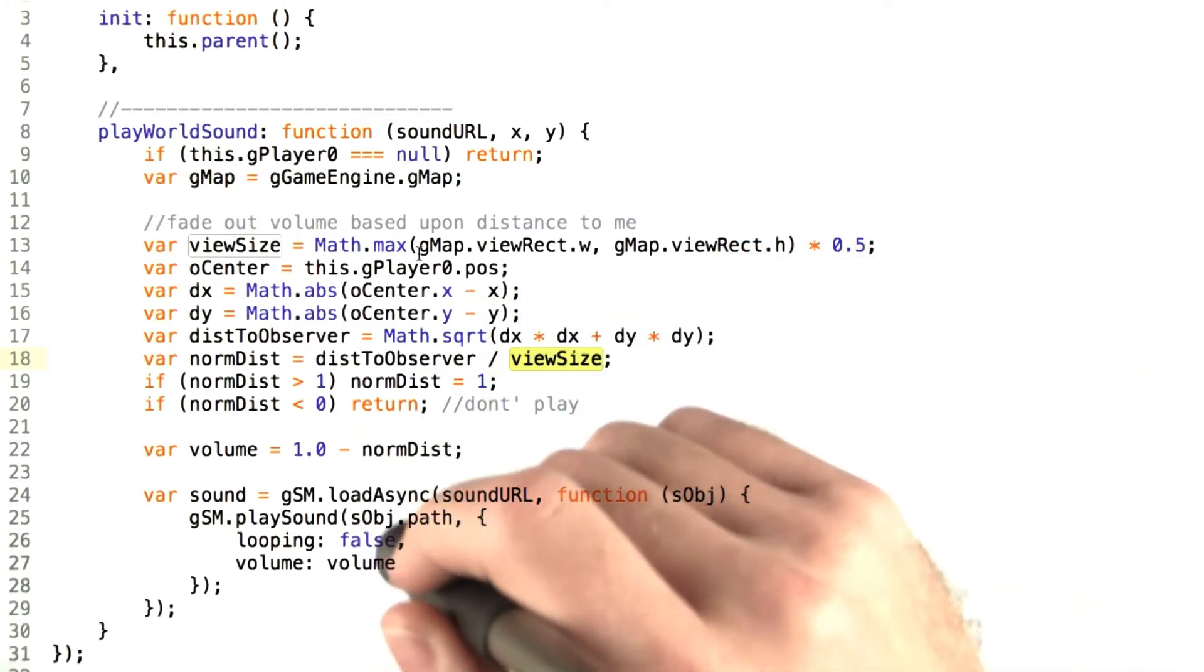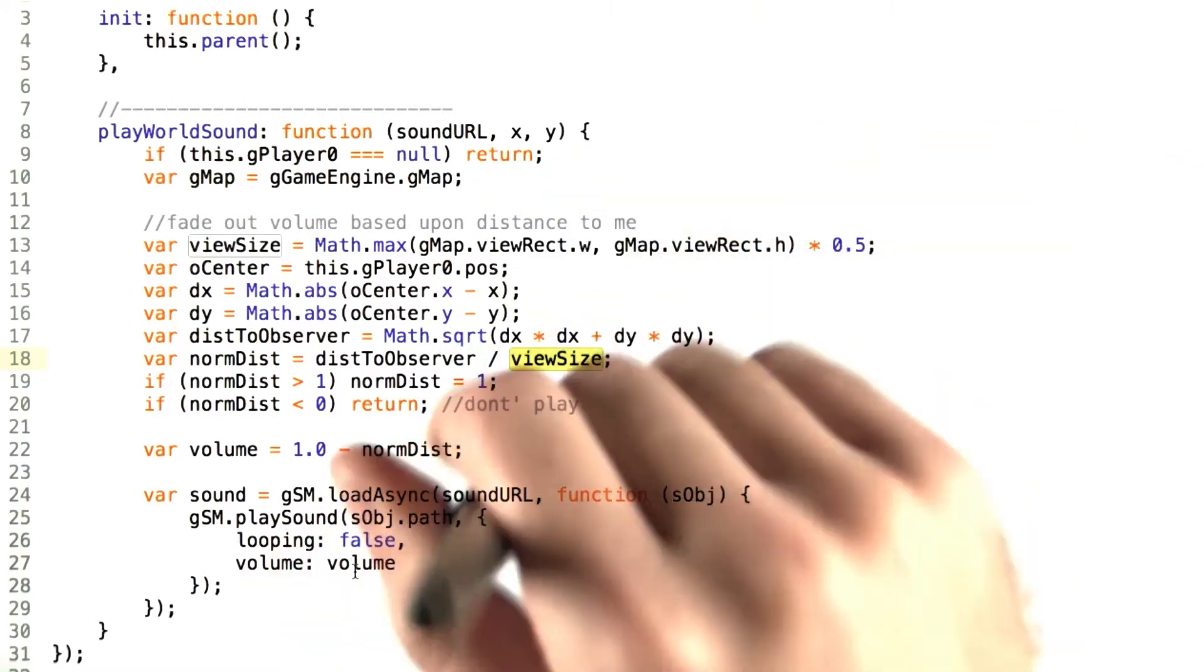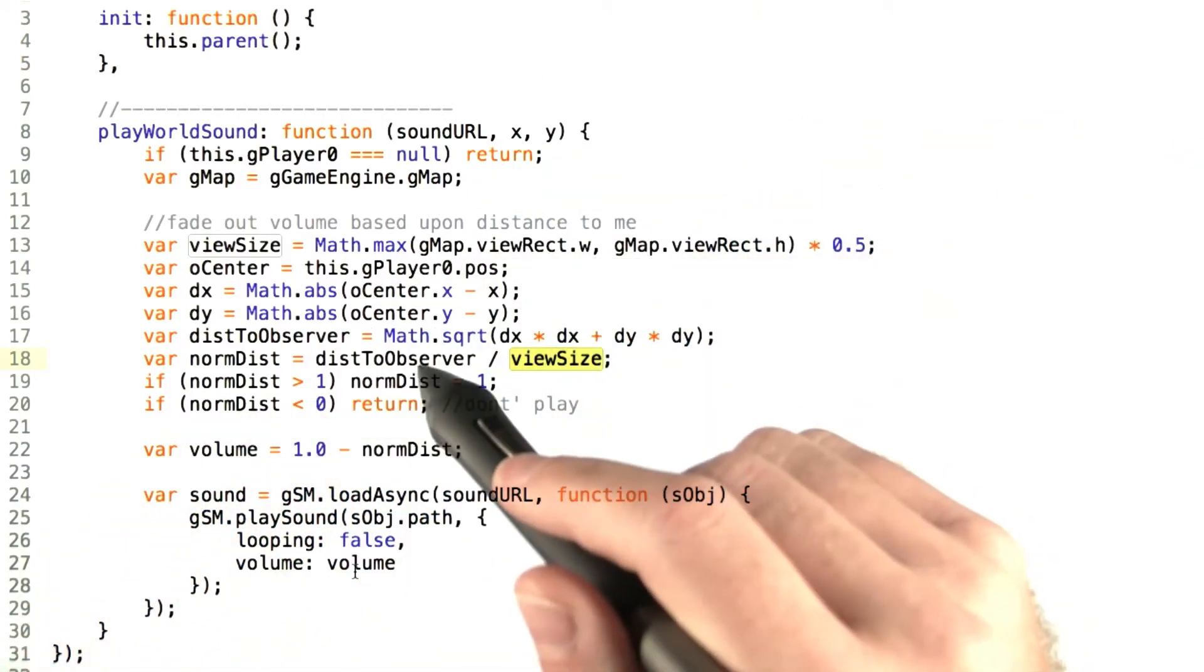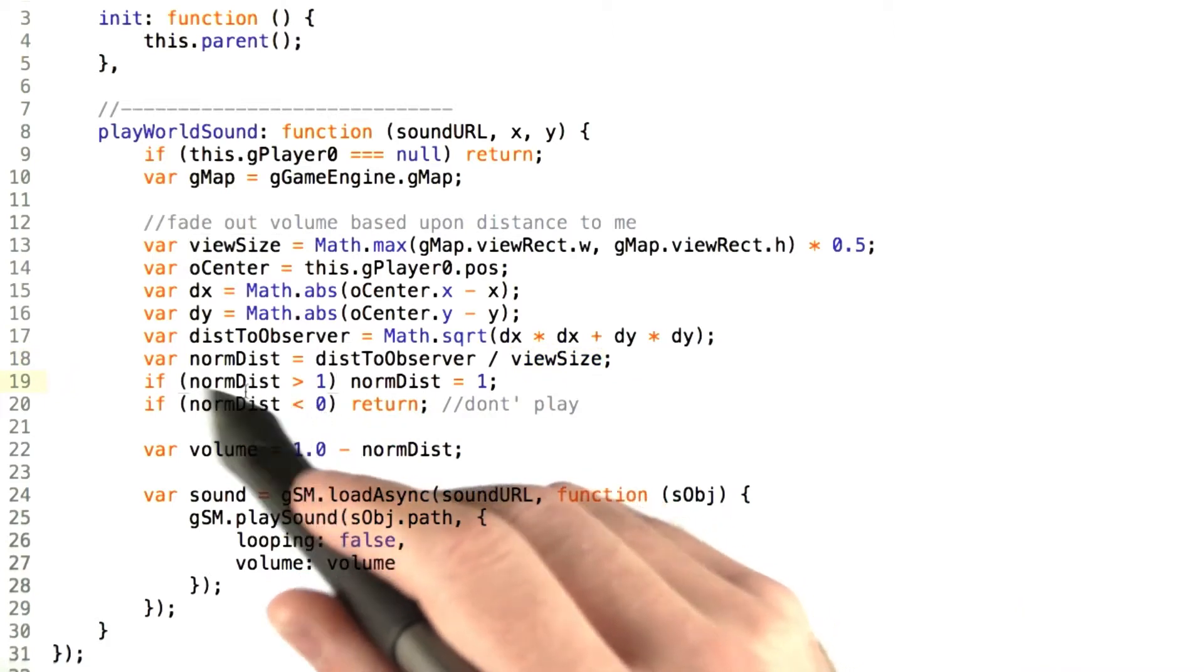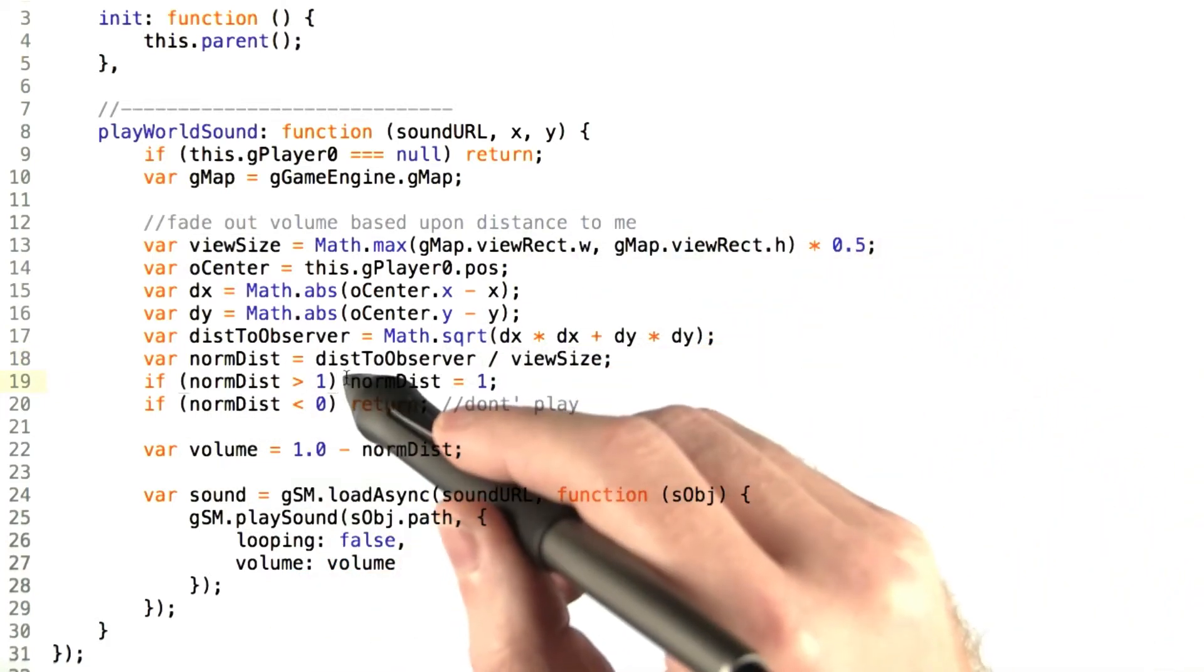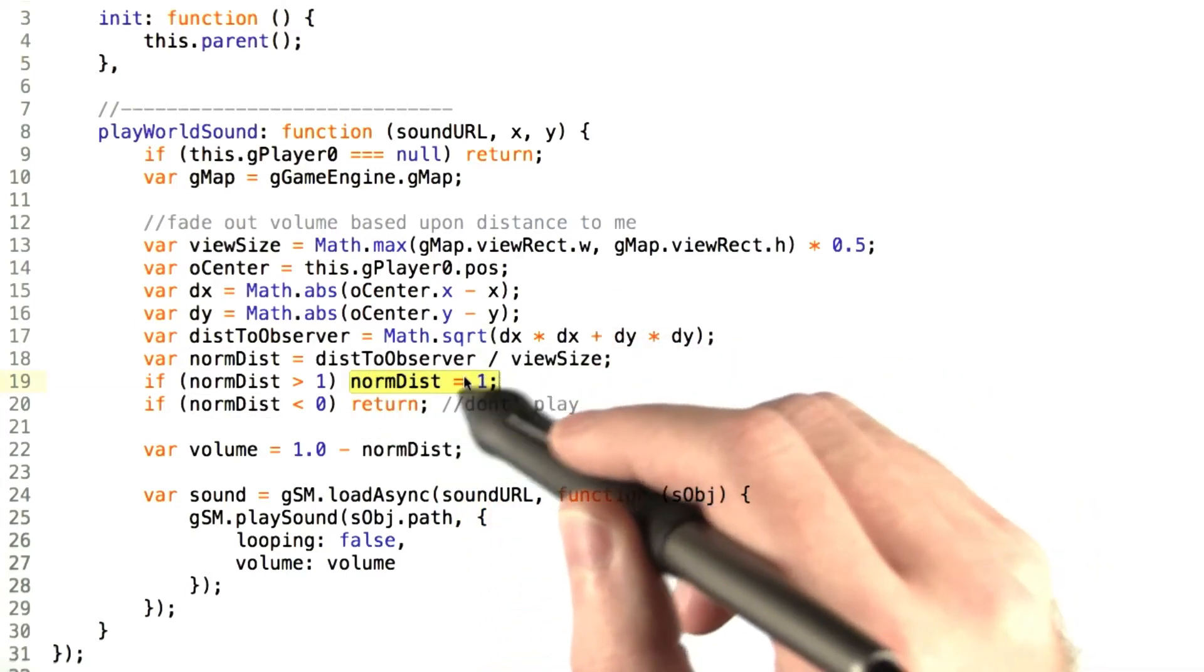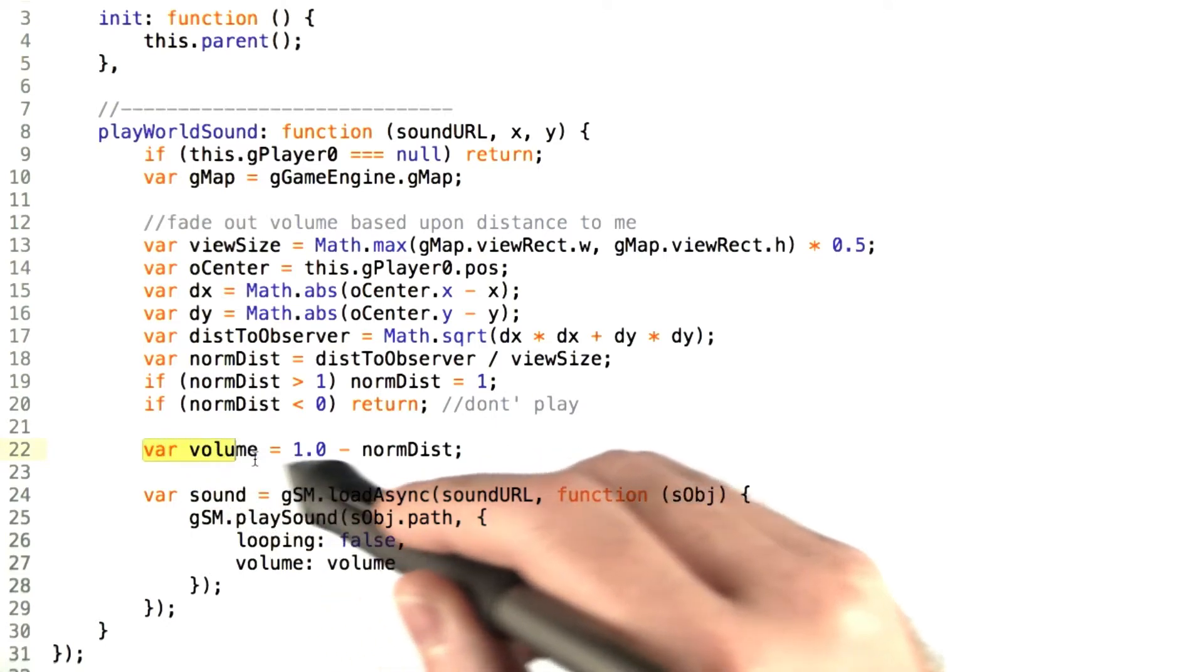As we discussed before, if we are more than two view sizes away, we want to start reducing the sound. So in this case, if the norm of the distance is greater than one view size away, we set the norm distance to one, since we're going to reduce the volume by the norm distance later on. It doesn't make sense to have a negative volume.